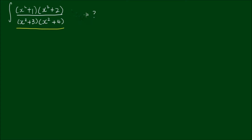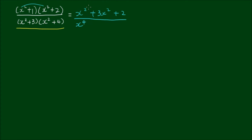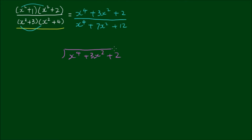Let's get rid of the integral for now. The first step is to expand both the numerator and the denominator. Expanding the first term into the second, we get x⁴ + 4 + 3x² + 2 on top, which simplifies, and on the bottom we get x⁴ + 7x² + 12.